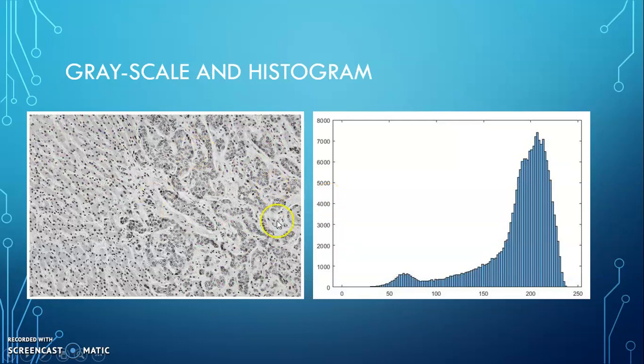So the purpose of the project is to mark this irregular part as green color. This is the grayscale image and the histogram. We can see a little bump here. I believe they are the black nucleus and the big bump here is the very bright background.